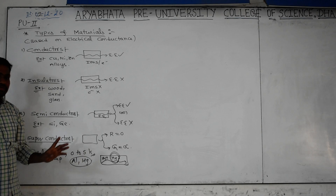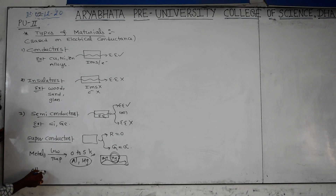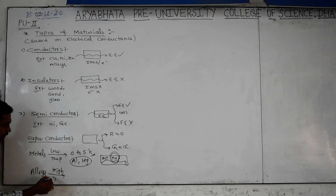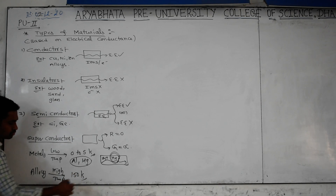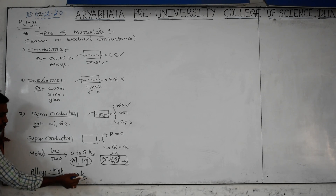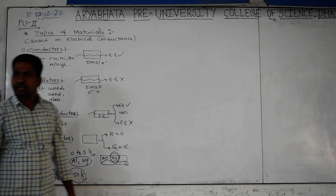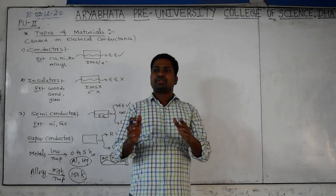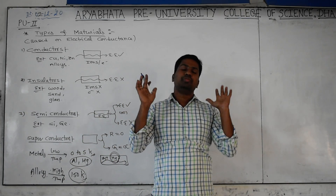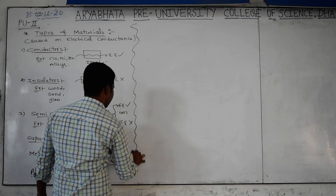Pure metals are superconductors at zero to five Kelvin. Some special alloys are also superconductors even at higher temperatures around 150 Kelvin. So alloys perform better at higher temperatures. To summarize: a superconductor is a material with zero resistance and infinite conductance.